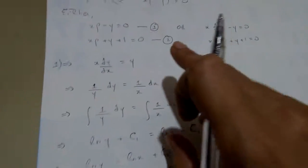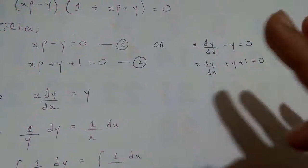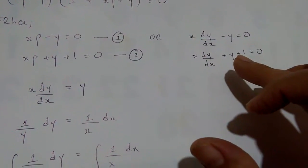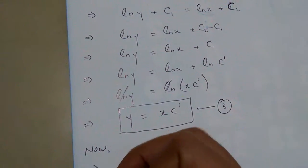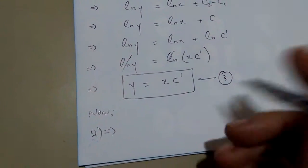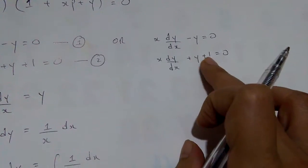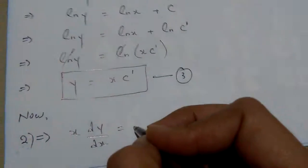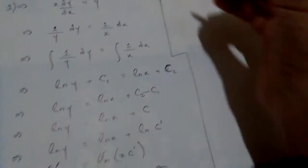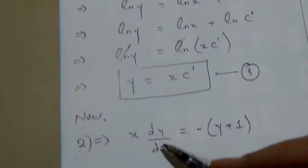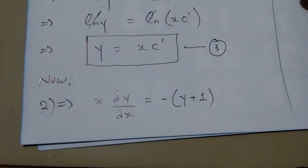Now picking up the second equation — this is also a first order, first degree differential equation. I can also solve this equation with the method of separating variables since the nature allows it. Taking reference of equation number two: the positive one goes to the other side, giving us a rearranged form to work with.